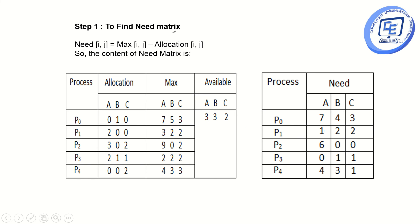Step one is to find the Need matrix. Need equals Maximum minus Allocation. For P0: 7, 5, 3 minus 0, 1, 0 gives 7, 4, 3. For P1: 3 minus 2 is 1; 2 minus 0 is 2; 2 minus 0 is 2, giving 1, 2, 2. We calculate likewise till P4 to get the complete Need matrix.